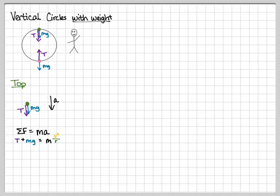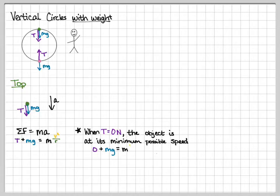We might ask you to find the minimum speed required in order to keep the object moving in a circle. At its minimum speed, the tension at the very top is zero. When T equals zero newtons, the object is at its minimum possible speed. So zero plus mg is equal to mv squared, the minimum velocity squared, divided by r. When we solve for that, those m's go away. This function is mass independent as well. We get that the minimum velocity is the square root of gr.